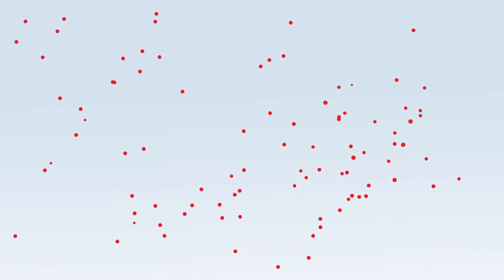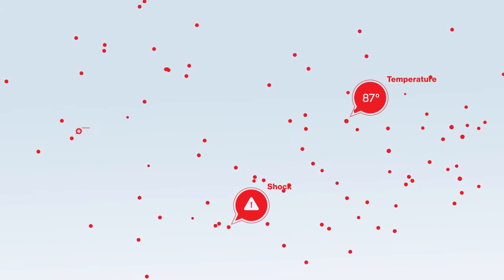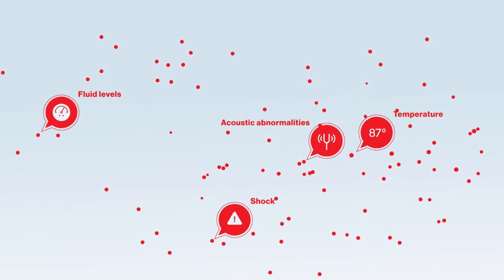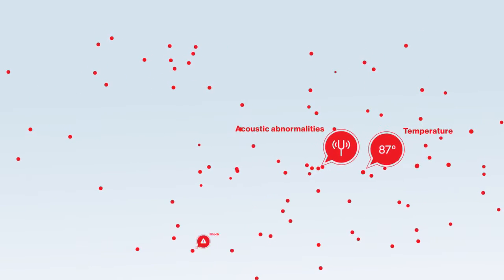Sensors connected to the Verizon network can monitor a custom range of parameters that you establish. Anything from temperature, shock, fluid levels, even acoustic abnormalities can be captured, logged, and shared with system operators and maintenance staff.